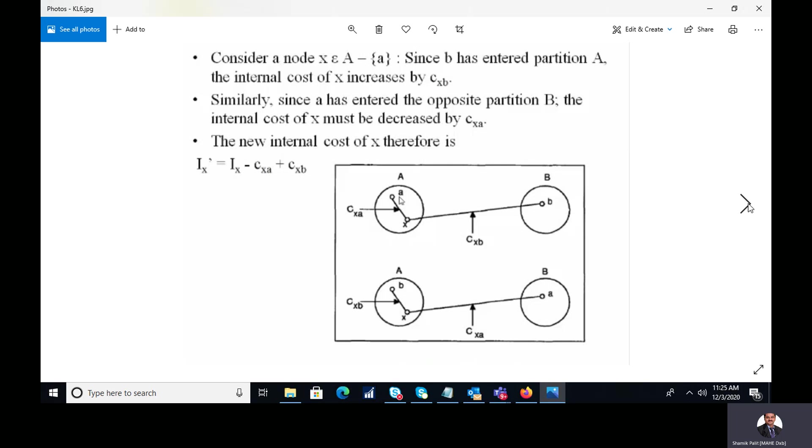So now here what is happening, suppose A and B both are connected to x. While you start interchanging the position of A with B, so we can say that the internal cost of Cxa will reduce. Why? Because now xA is no more an internal connection. It will be an external connection while we will move A from cluster A to cluster B.